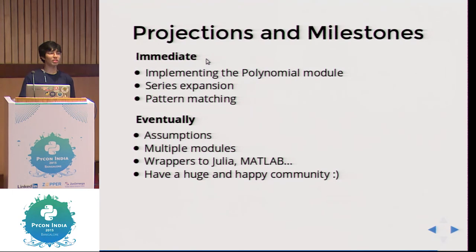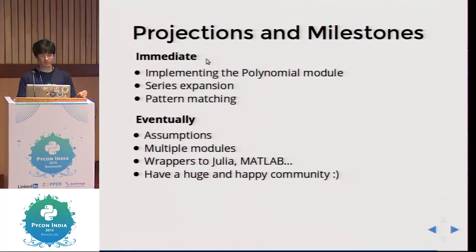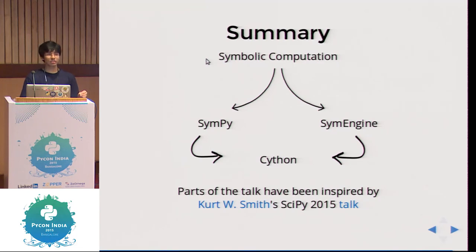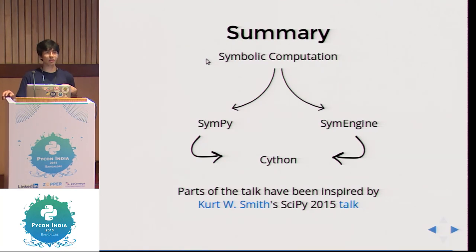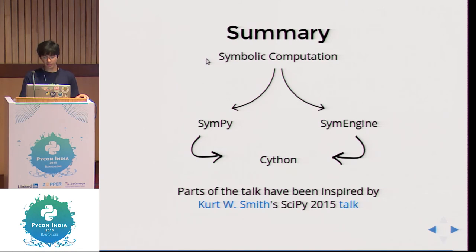Future plans: complete the polynomial module — once it is done you can build multiple modules on top of it, including series expansion. Pattern matching is also a very important tool. We are planning on having assumptions, multiple modules, and wrappers to Julia — that work has started. The SymPy community is around 400 members, and something that huge for SymEngine would be cool. The summary: symbolic computation means symbolically manipulating expressions, and it is different from numeric evaluation. We spoke about SymPy and SymEngine — different ideologies — and how SymEngine interacts with SymPy using Cython.